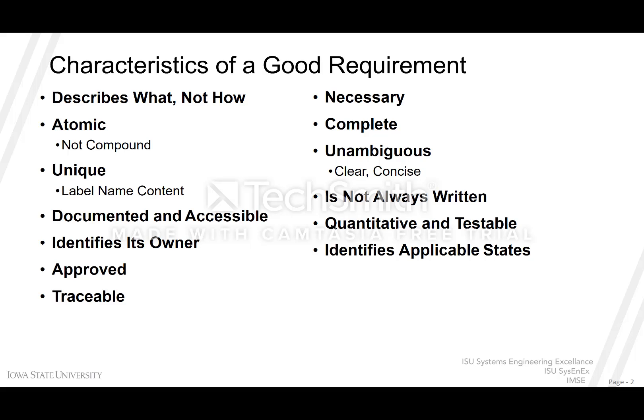Identify applicable states — consider the different states or conditions the system might be used in. For example, consider the Ford and Firestone debate. Firestone manufactured tires on Ford Explorers that were having consumer failures causing safety and crash issues. Ford claimed the tires were not made to specifications; Firestone claimed they conformed to requirements and Ford was using them improperly. Testing for the Ford Explorer did not account for additional load, towing a trailer, or having passengers — it was tested only as it left the factory, which clearly didn't identify the applicable states the vehicle would be used in.